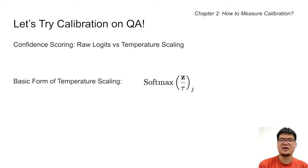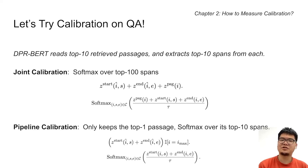The idea of temperature scaling is to divide the raw logits by an appropriate temperature scalar T before passing through softmax. To apply temperature scaling on DPR BERT, we try two settings.